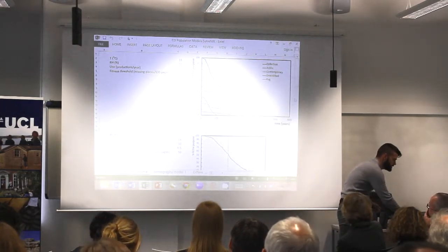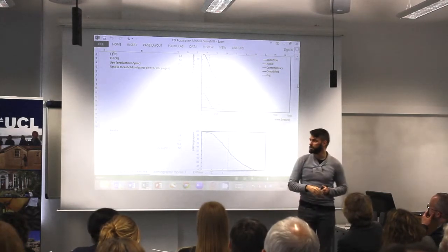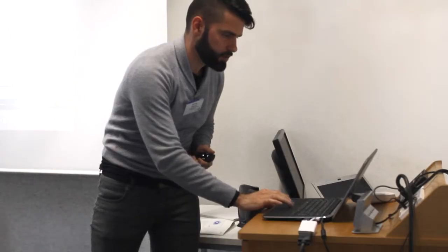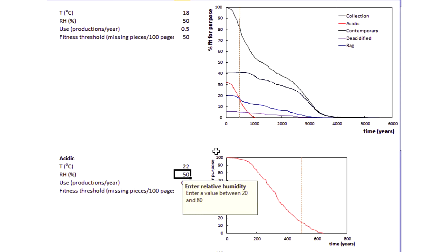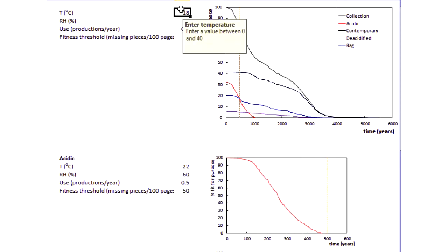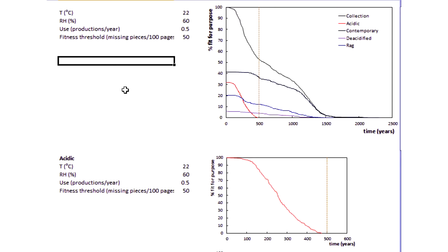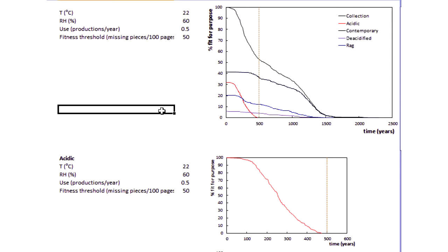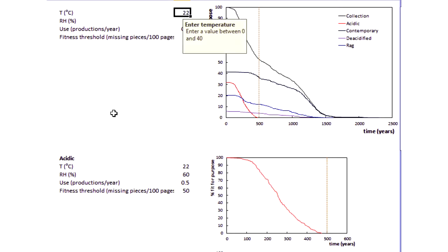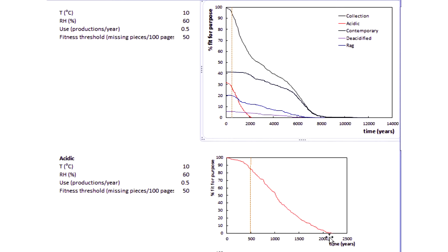Just to show you: the red line below is for the acidic paper. Whereas here we have the same 50% humidity at this temperature, I would just change one and say, well, 22 degrees is not unheard of, and a relative humidity of, say, 60%. And this is how that has changed in comparison to before. You can see that the collection of acidic paper is now all behind the 500-year threshold, whereas in the previous case only half of it was. And if I lower the temperature or the humidity, then I can extend it all to be after the 500-year threshold and match one of the thresholds of the other types of the collection.